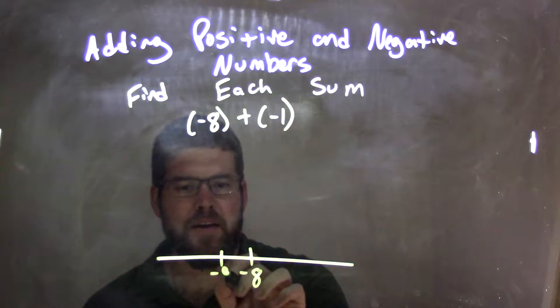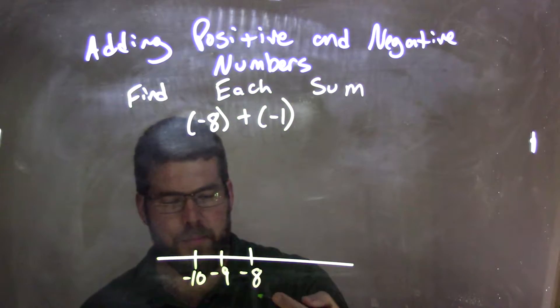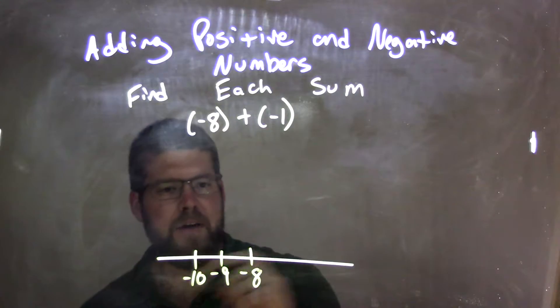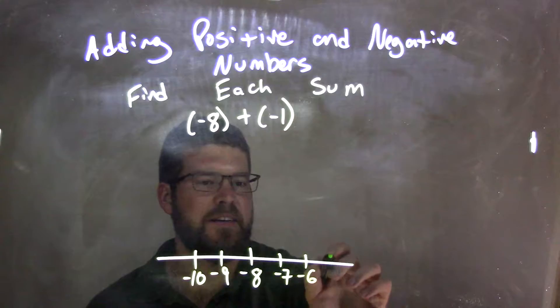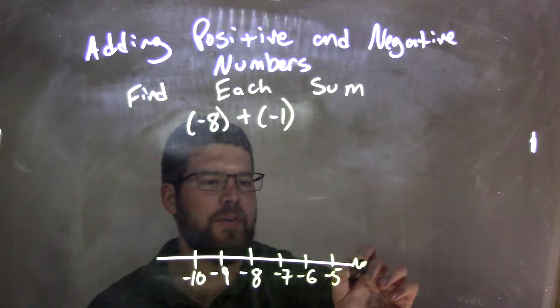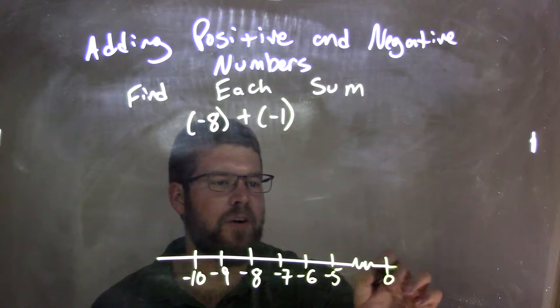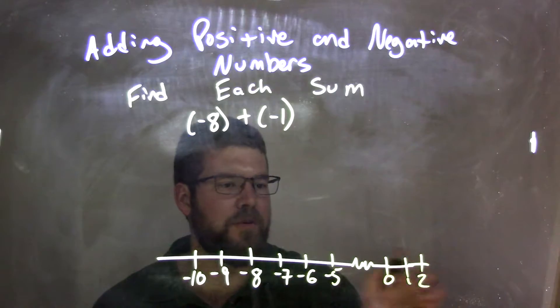To the left, we have negative 9, negative 10, because those numbers are more negative, they're smaller to the left. Then we have negative 7, negative 6, negative 5, and if we had the break here, we'd be at 0, then 1, then 2.